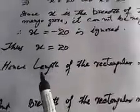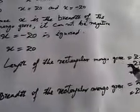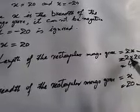To yeh x equal 20 ko use kar ke hum length and breadth nikalenge. Hence length of the rectangular mango groove woh kis ke barabar tha 2x. Ab x hum ne kya li hai 20, so 2 into 20 that is 40 meters.